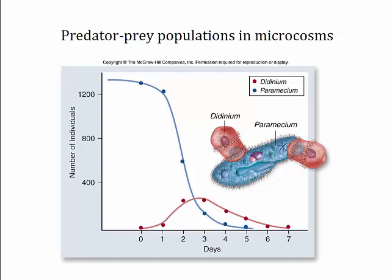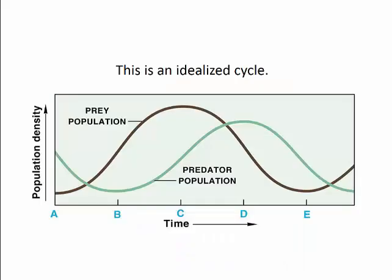In nature, we don't usually see predator and prey populations go extinct. Instead, we expect to see this graph, which shows the idealized relationship between predator and prey populations. Notice first that the two populations cycle over time — neither goes extinct. There are times when each population is high and times when each is low. Notice that prey populations peak and dip slightly before predator populations peak and dip. The peaks don't match because it takes time for predators to convert energy from eating prey into new predators. The valleys don't match because when prey populations hit rock bottom, predators are still dying off from lack of food.